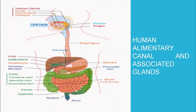The stomach extends into the small intestine, which has three parts: duodenum, jejunum and ileum. The small intestine then moves on to the large intestine, and ultimately the waste product is eliminated through the anus.